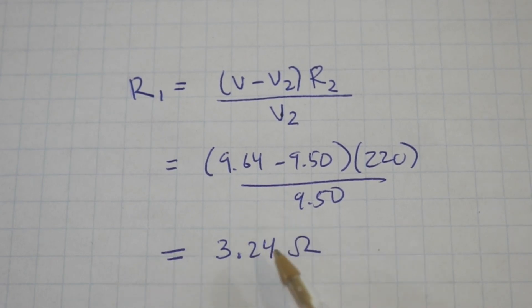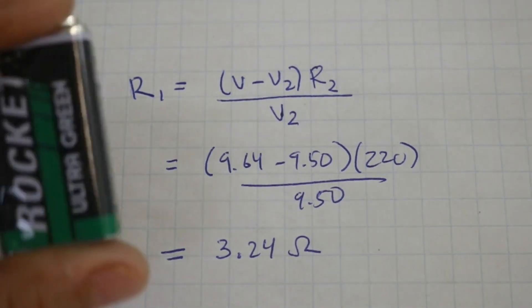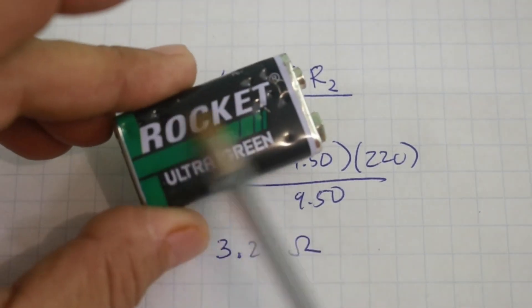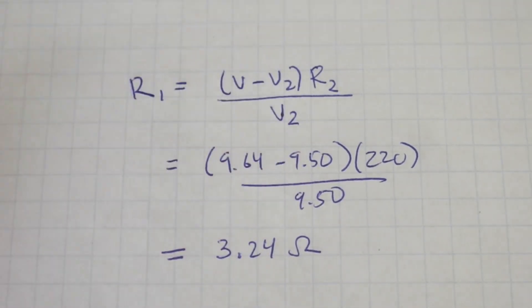This is the internal resistance. Now, I made the same with the other battery, the other 9 volt battery, but this is a carbon zinc battery. And the value that I get is much larger of around 15.5 ohms.